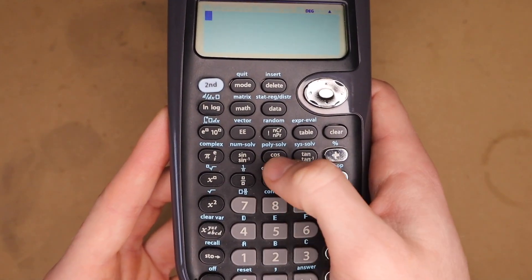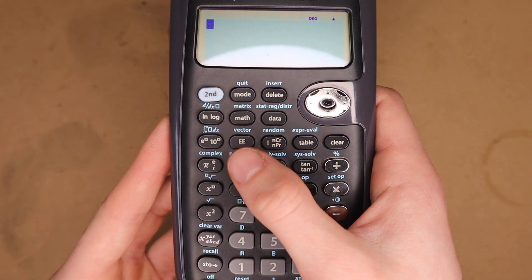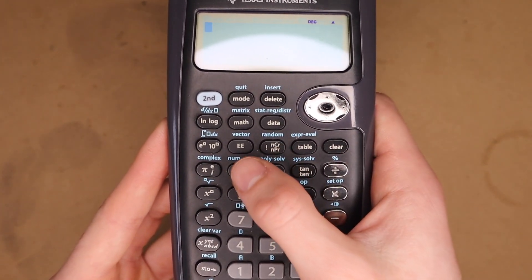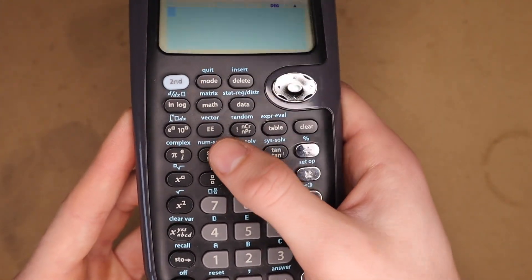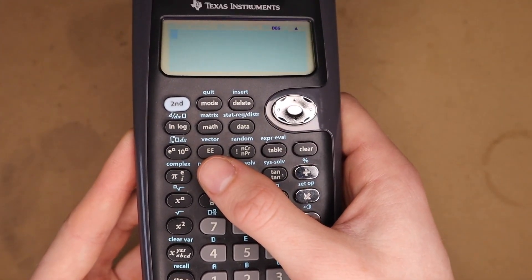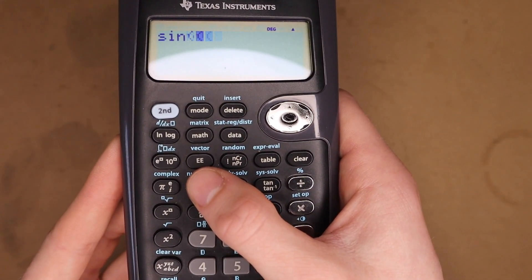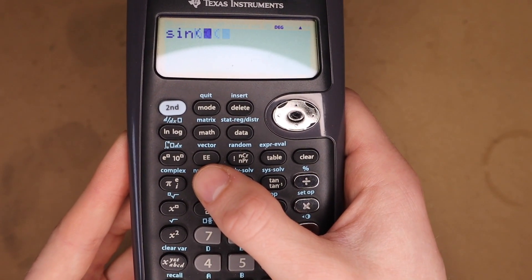So here are the three trig function buttons right here, sine, cosine, and tangent. And if you want sine, you just click it once. And then, for example, if you wanted inverse sine, you just click it twice. And then if you wanted something like the hyperbolic sine or the inverse of the hyperbolic sine, you just click it three or four times, and you can see it'll scroll through all of those options.